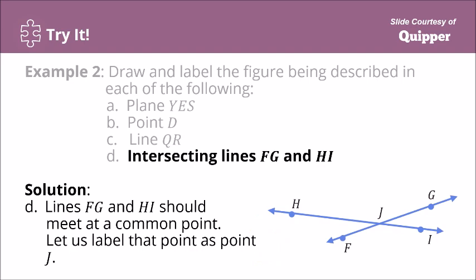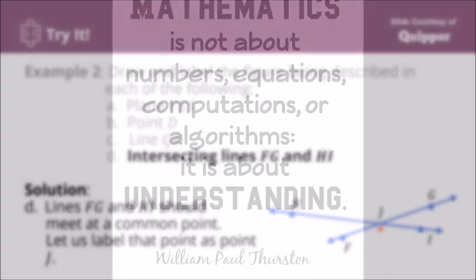For the intersecting lines FG and HI: draw two lines. We have Line HI and Line FG. These two lines intersect at a point of intersection, which we label as Point J.